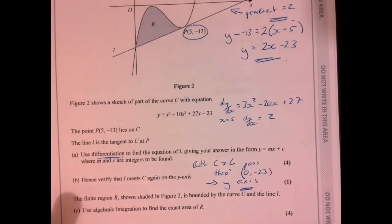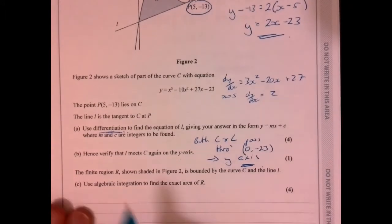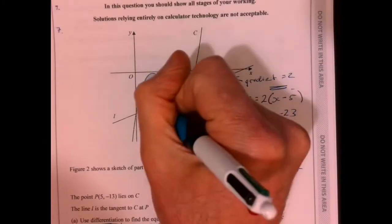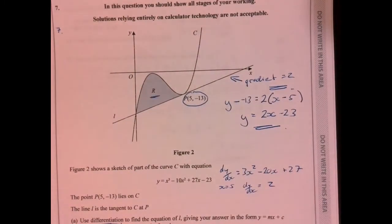Now part C. Part C is a little bit tougher for us to do. It says, use algebraic integration to find the exact area of R. So we need to find the area in here. How are we going to do that?